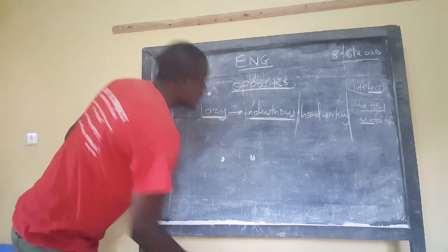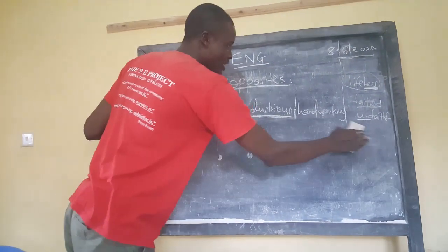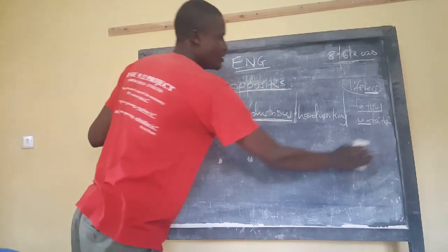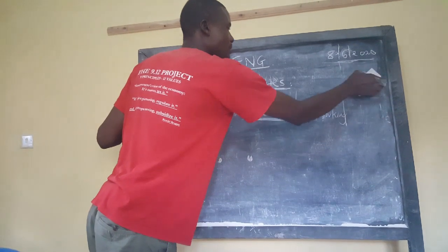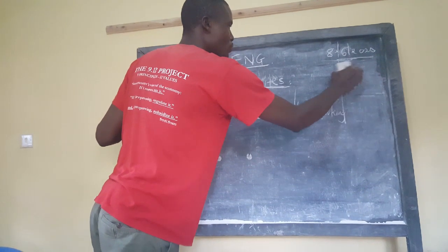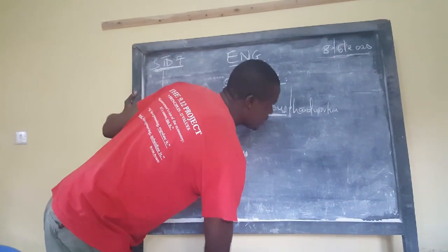So a prefix comes before and a suffix comes after. Sometimes in writing the opposite of words, you may use a prefix or a suffix, as the word may appear. Some words don't take a suffix; they will automatically take a particular prefix.